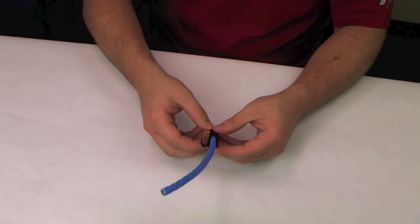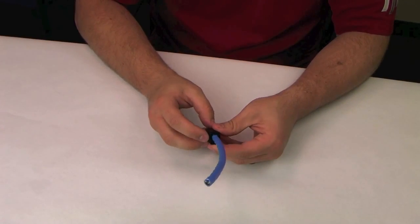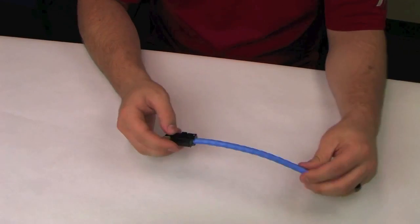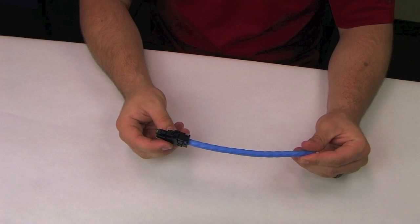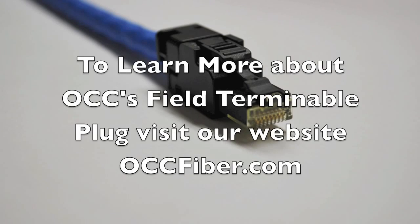To complete the field terminable plug, rotate the strain relief to snap closed around the cable. Now you have a completed OCC field terminable plug ready for use with any direct attach access point.